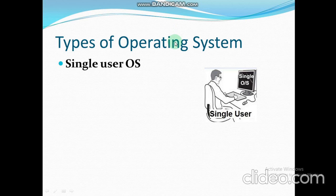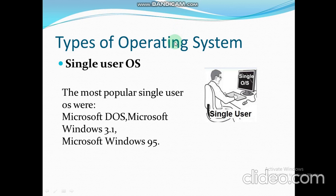First is the single-user operating system, where a single user is using the system at a time. This was the initial version of the operating system that allowed only one user to work with the computer at a time. The most popular single-user operating systems were Microsoft DOS, Microsoft Windows 3.1, and Microsoft Windows 95. Due to their limited features, they are no longer in use nowadays.